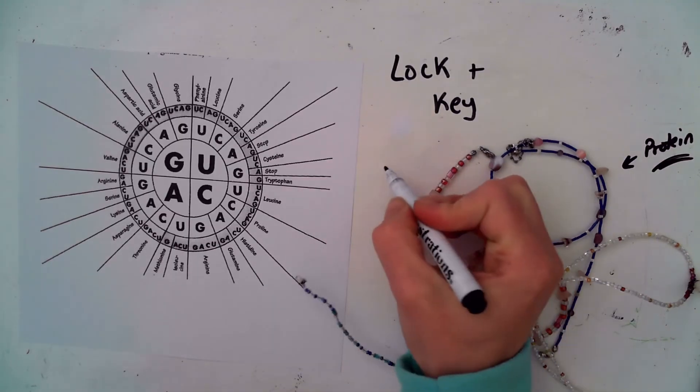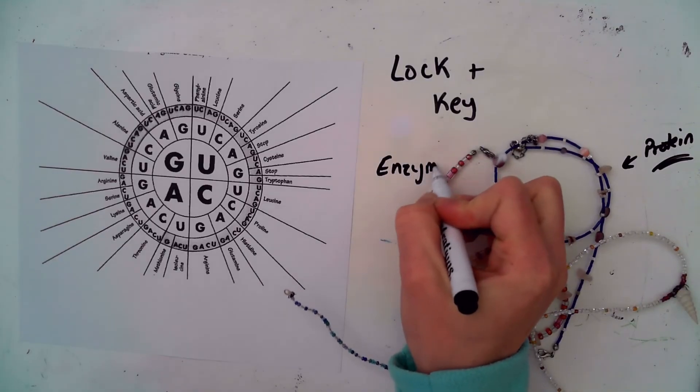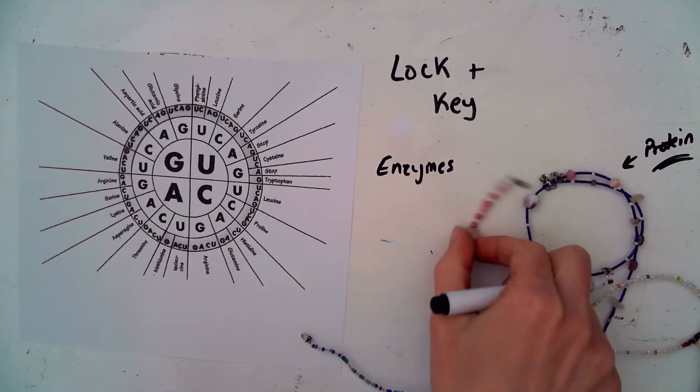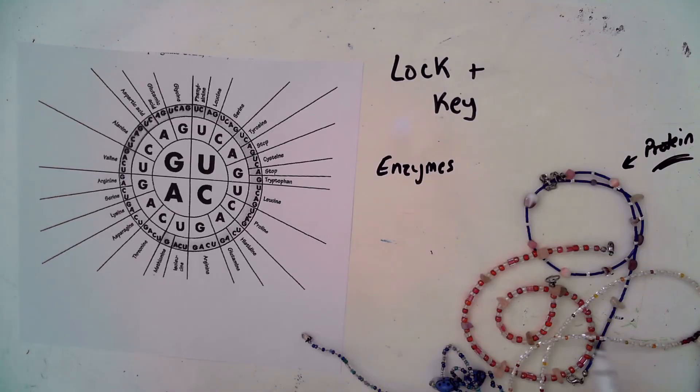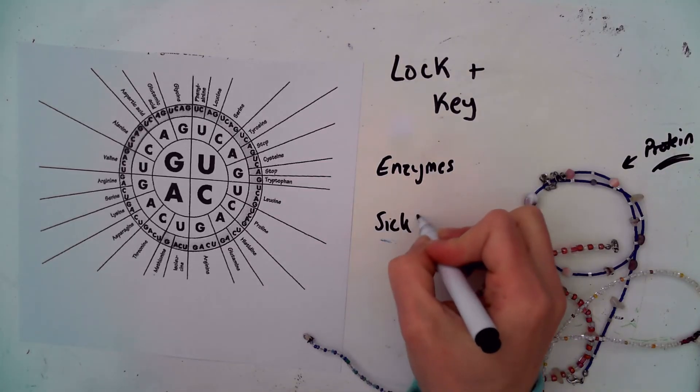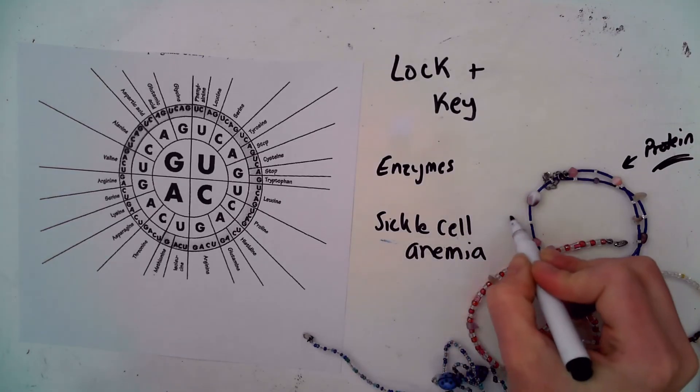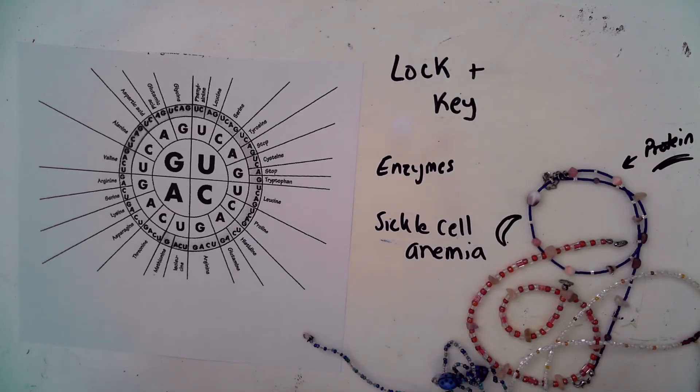And some examples of that would include enzymes. They have to be perfectly shaped to be able to interact. Another very common example of what can go wrong when just one amino acid. So if just one of these was wrong, the protein would fold differently. And you can end up with a variety of different diseases are caused this way. Sickle cell anemia, where the blood cells are shaped like a half moon sickle shape instead of round, is caused by one amino acid different.